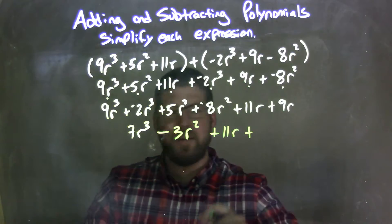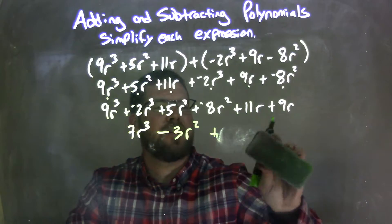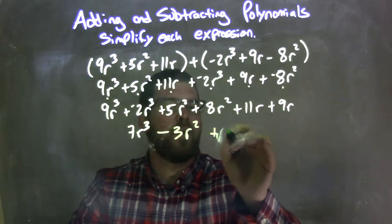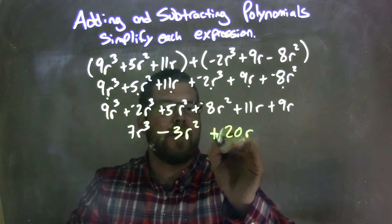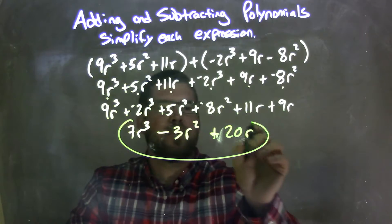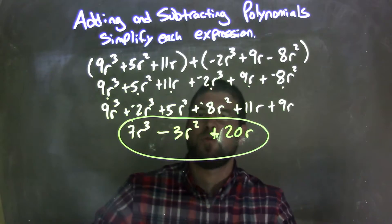Now we have plus 11r right there, and plus, oh, I'm going to combine those two, can't just write them down, can't get too trigger-happy there. 11r plus 9r is 20r, so 20r right there, and there we have it. We have 7r³ minus 3r² plus 20r, that's our final answer.